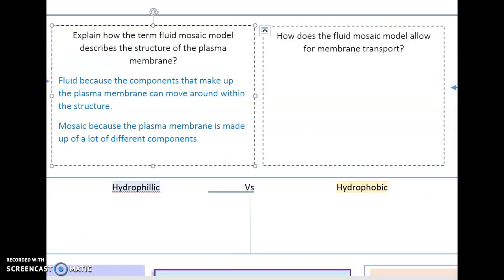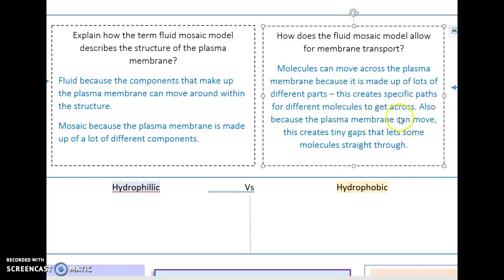So that leads on into the next little bit. How does a fluid mosaic model allow for membrane transport? When this question talks about membrane transport, it's talking about how molecules can move across the membrane. Now, how these molecules move across the membrane depends on a couple of factors. Their size, the polarity, and a few other things. We're going to get into that in more detail. But because this membrane is made up of a lot of different parts, it means there's different avenues for different molecules to get across. And because it's fluid, it means sometimes there's gaps and some things can move straight through it. Molecules can move across the plasma membrane because it's made up of a lot of different parts. This creates specific paths for different molecules to get across. Also, because the plasma membrane can move, there's tiny gaps that let some molecules straight through.